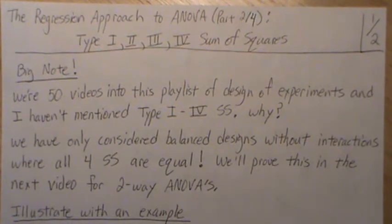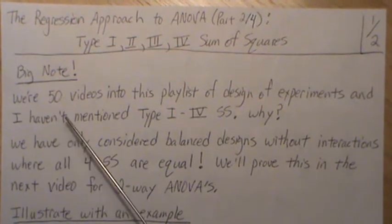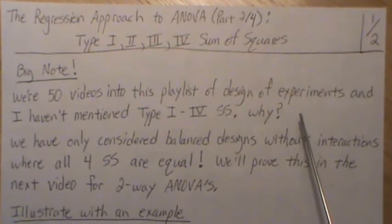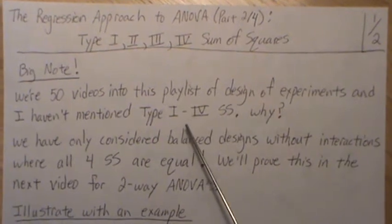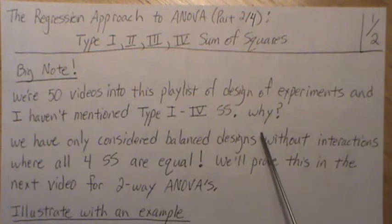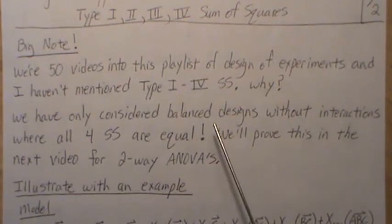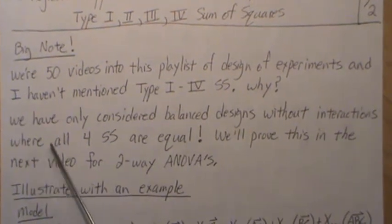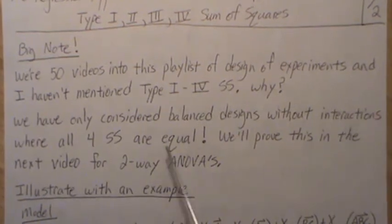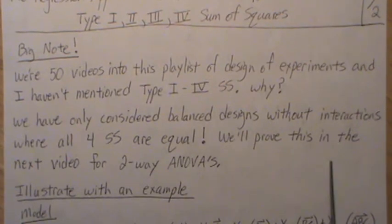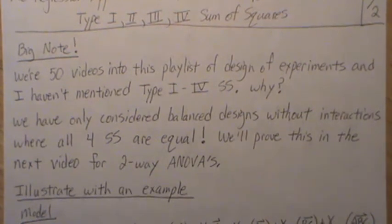One big note: we're about 50 videos into this playlist of Design of Experiments, and I haven't mentioned type 1 through type 4 sums of squares. The reason is we've only considered balanced designs without interactions. And in balanced designs without interactions, all four sums of squares are equal. We'll prove this in the next video for two-way ANOVAs.